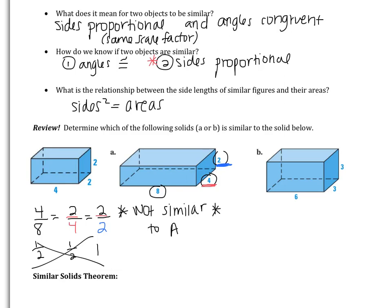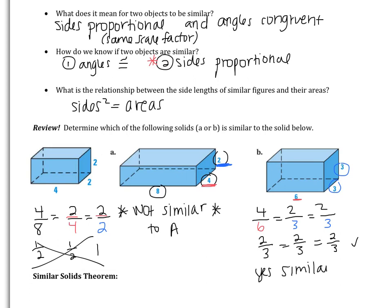Now you try with solid B — set up some proportions and decide if the solids are similar. On figure B, 6 is the largest side, so it goes with 4. The other two sides are 3, so those match with my 2s. 4 over 6 simplifies to 2/3, so I get 2/3 = 2/3 = 2/3. Yes, our figure is similar to solid B. You just check if their sides are proportional.